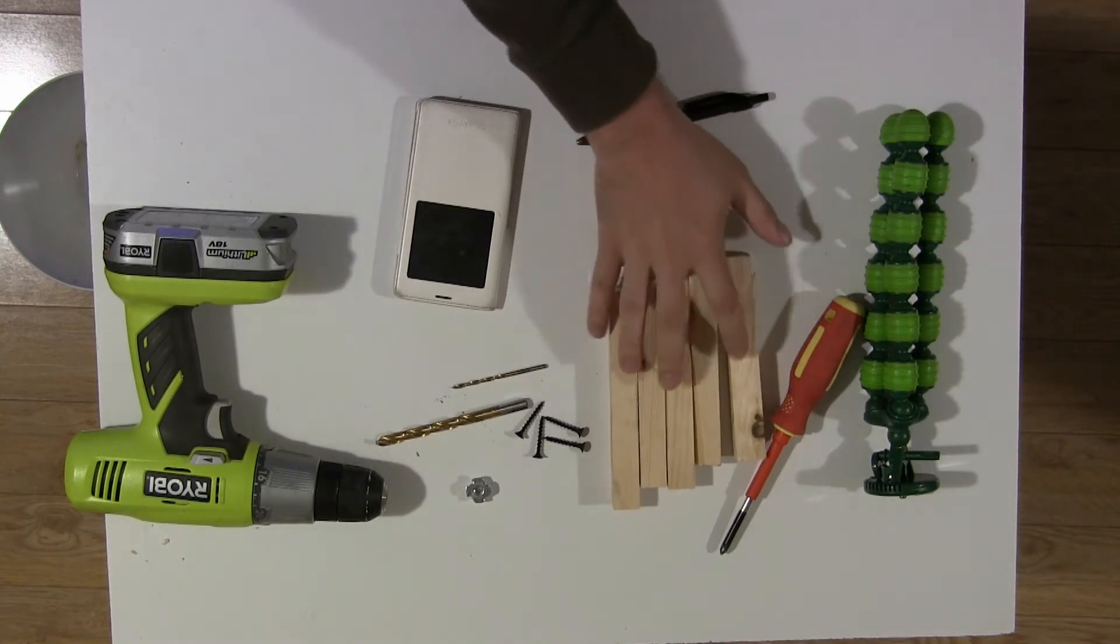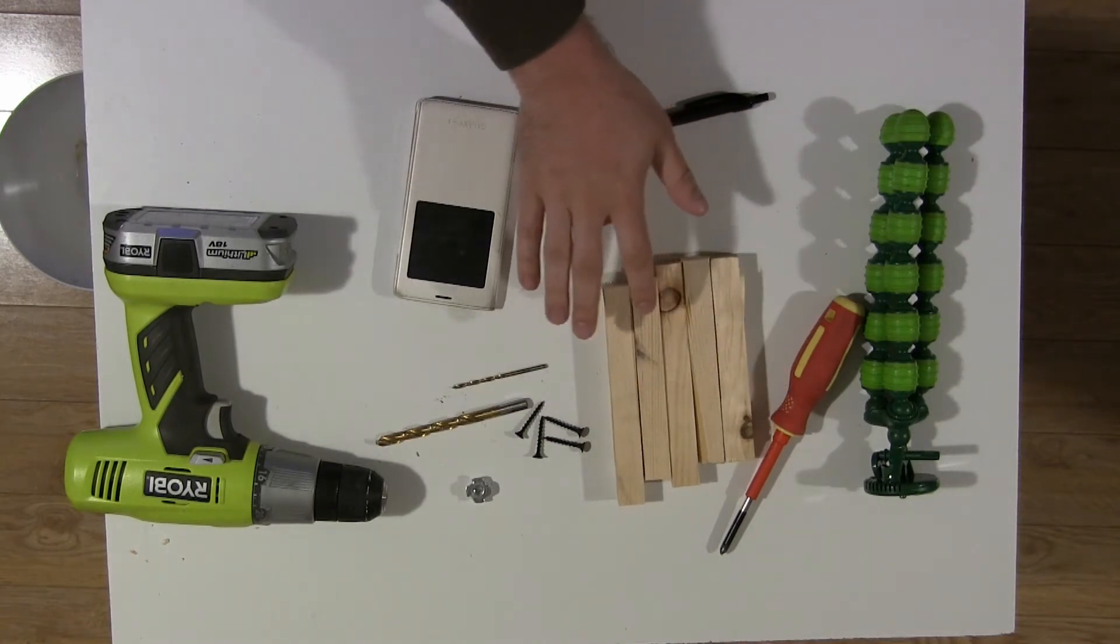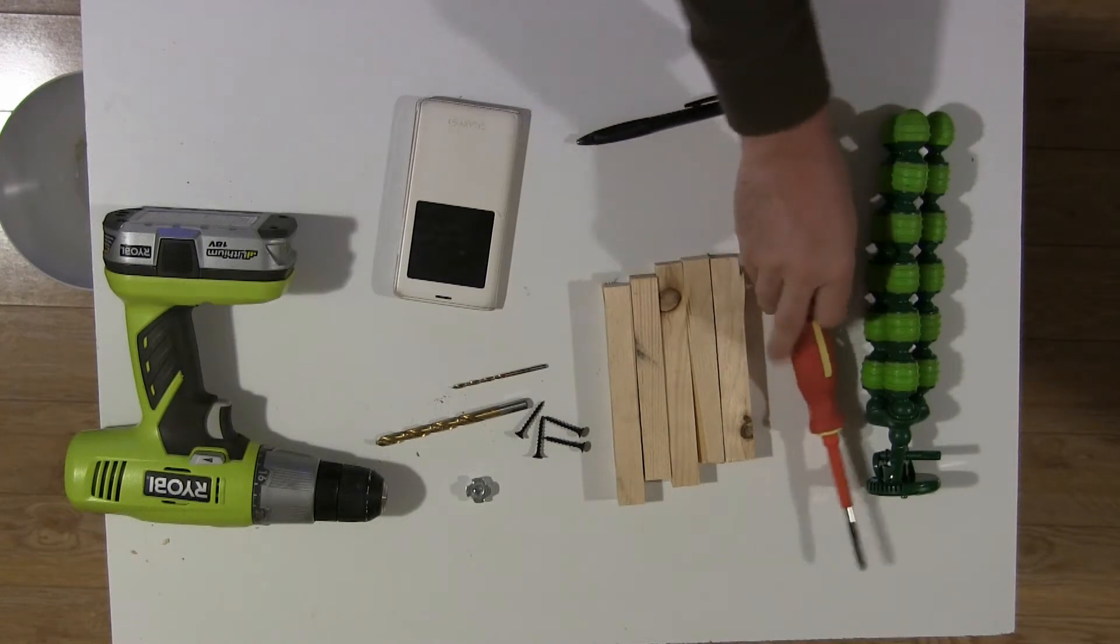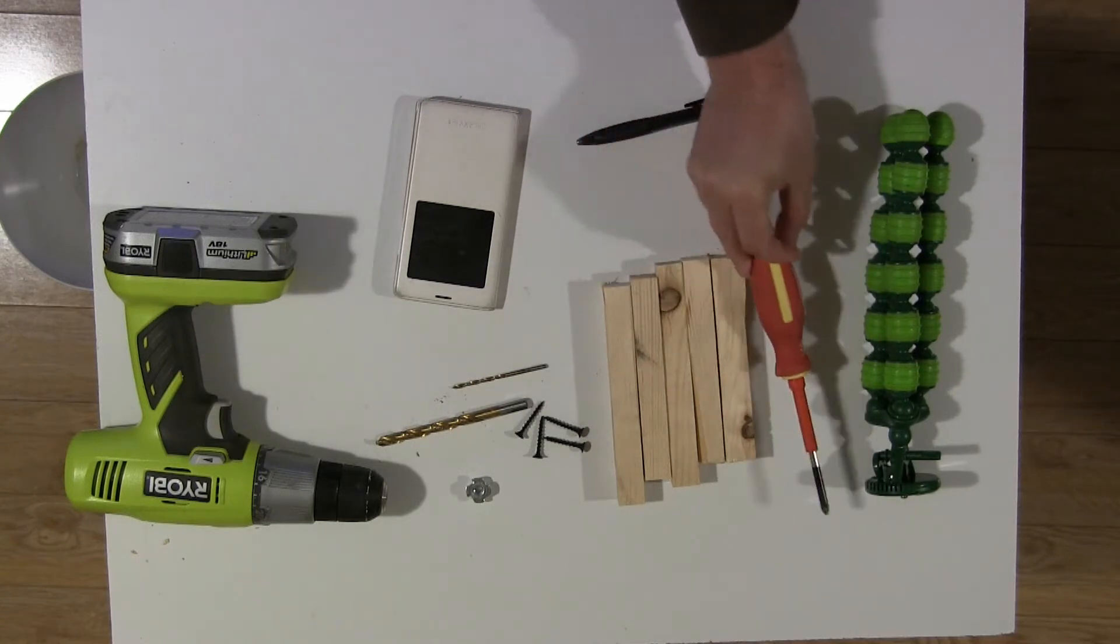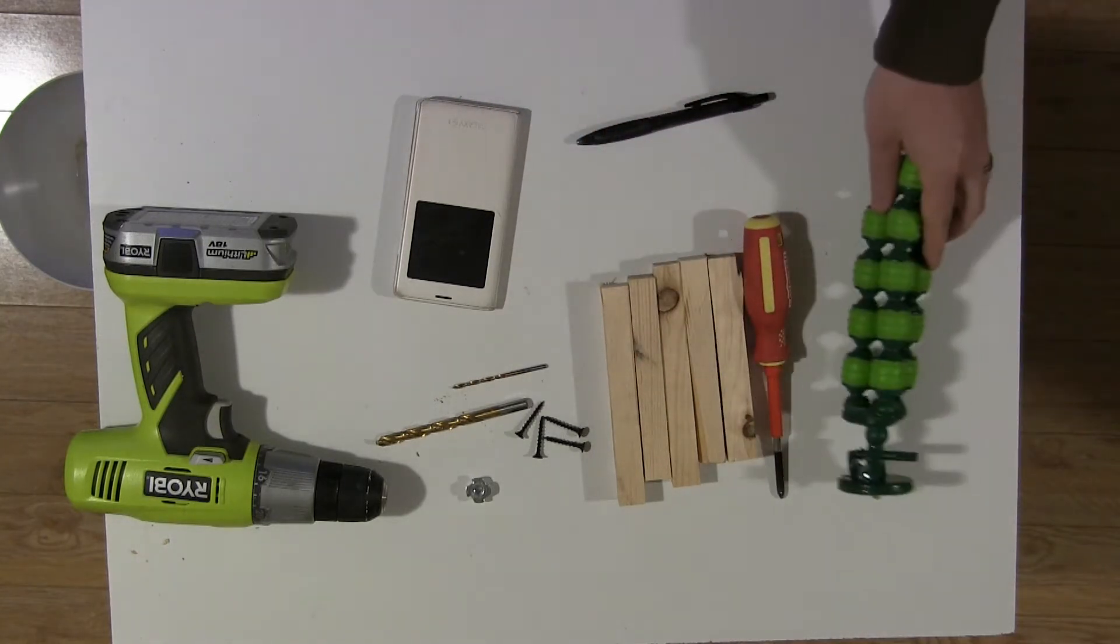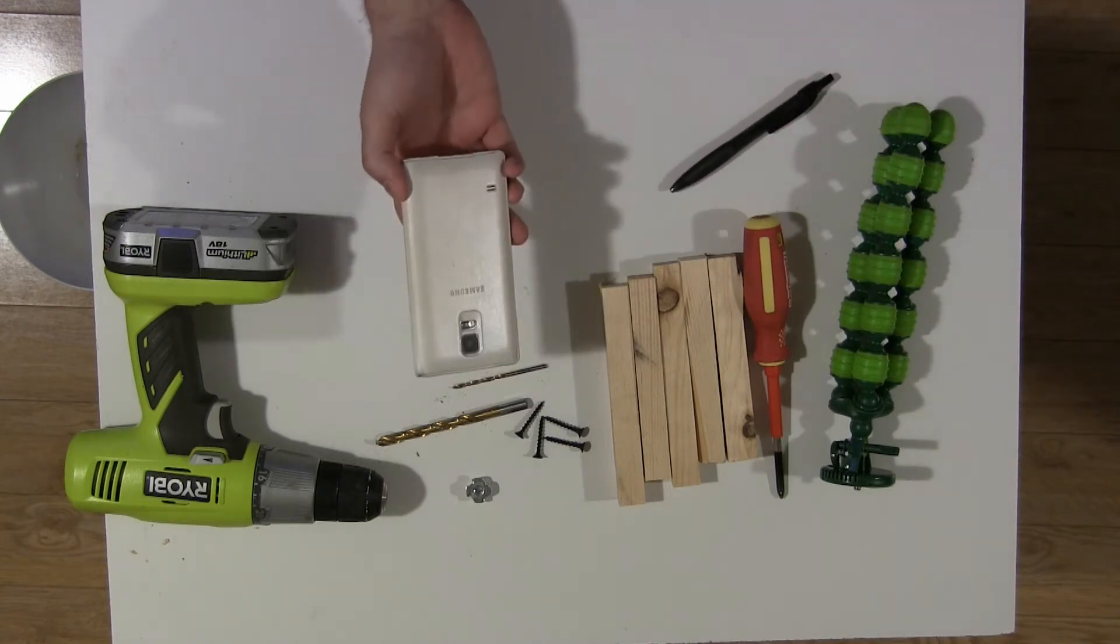You'll also need five pieces of 1 by 1 or whatever scrap wood you could get, a screwdriver to drive your screws, your tripod, a pen, and your phone.